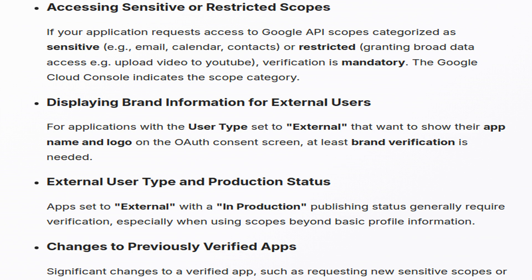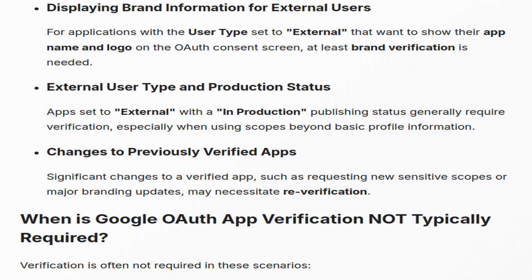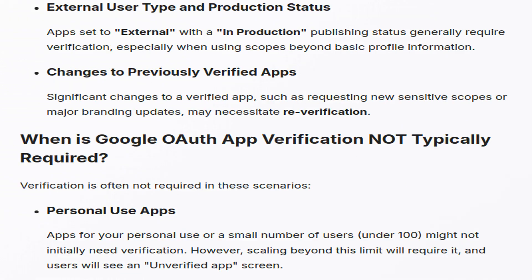The Google Cloud Console identifies scope categories. Applications set to external that wish to display their app name and logo on the OAuth consent screen must undergo brand verification to meet display requirements. Apps designated as external with an in-production status usually require verification if they seek permissions beyond basic profile information, thereby ensuring compliance.